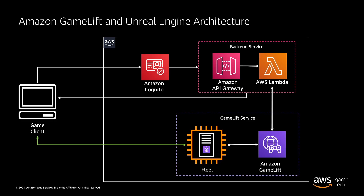Through Cognito, new users will be able to register an account using an email address or some external identity provider. Registered users will then be able to get temporary credentials through Cognito with permissions to make calls to our back-end service API.